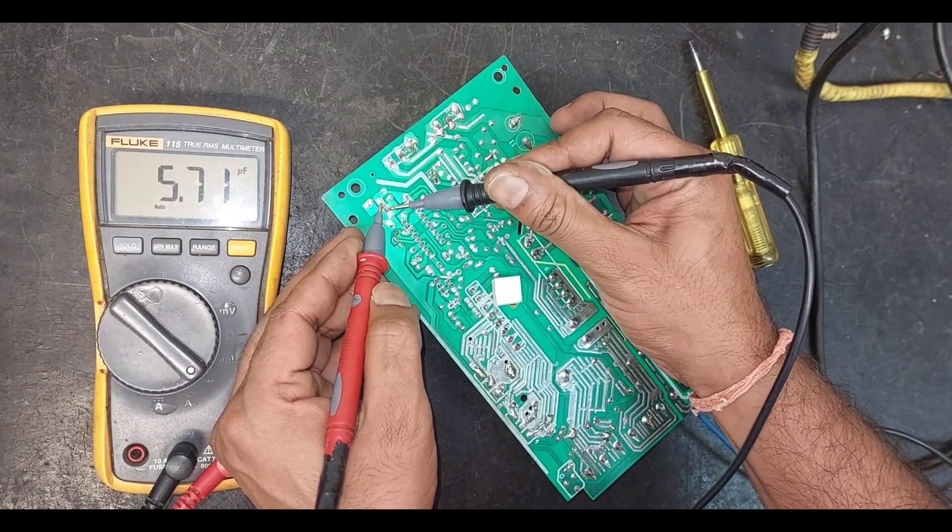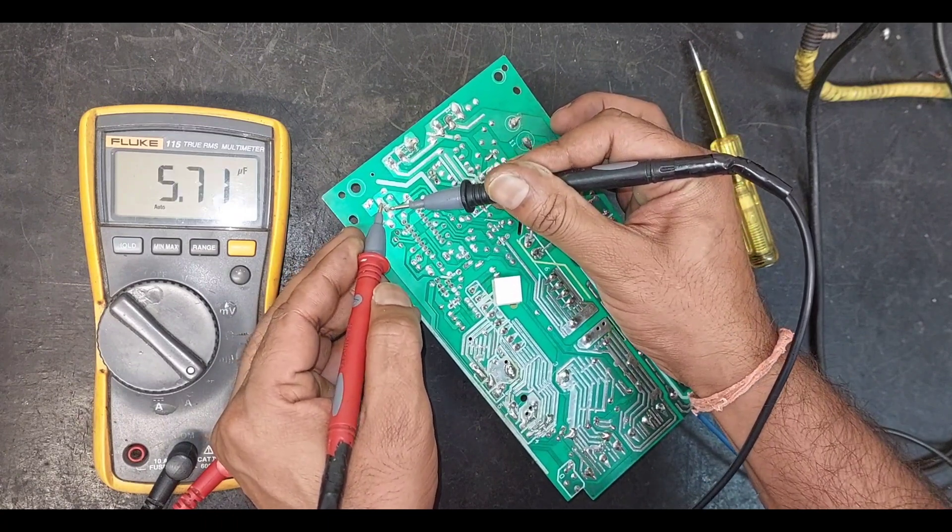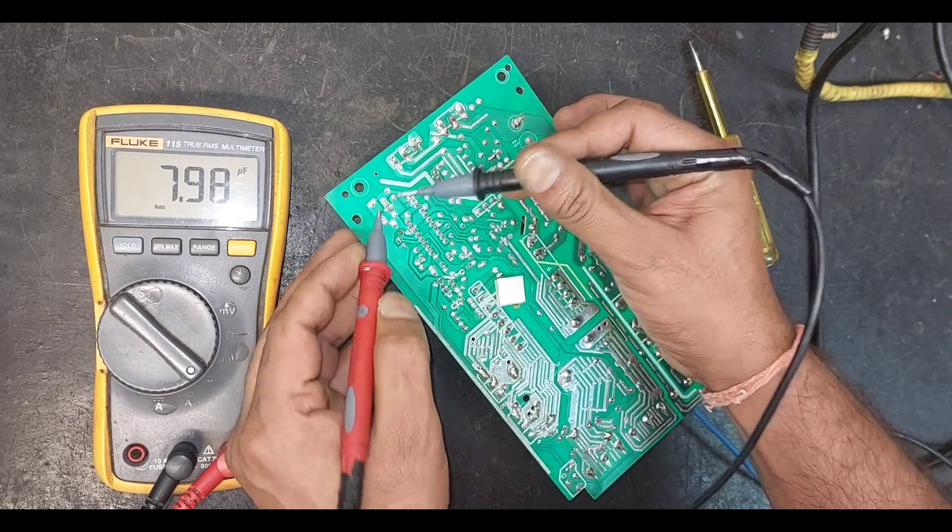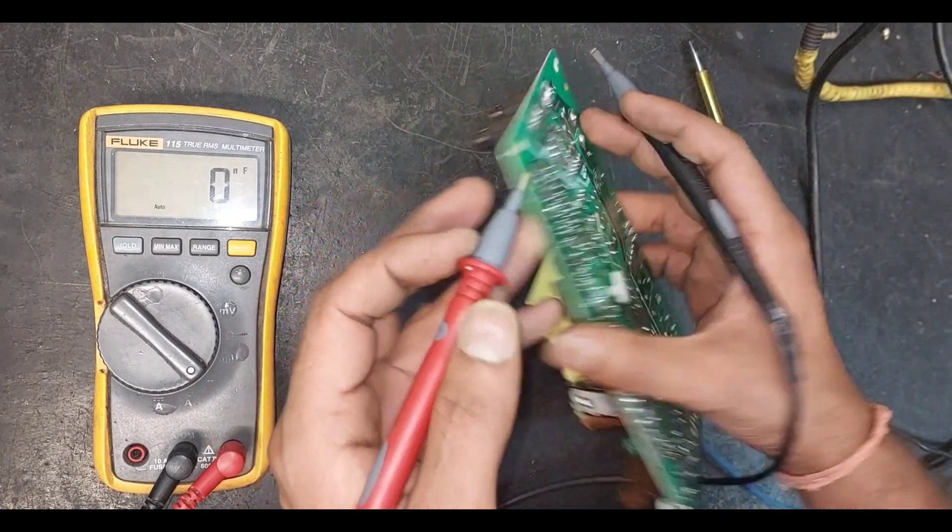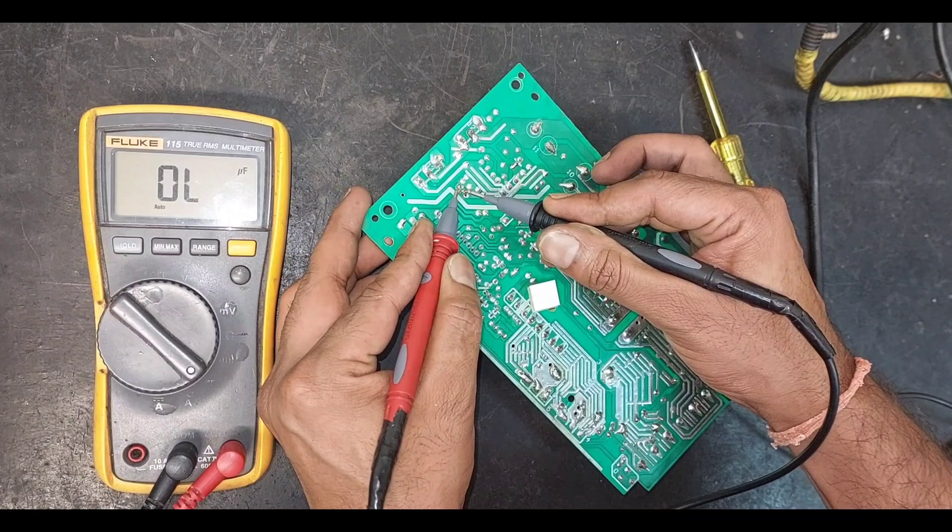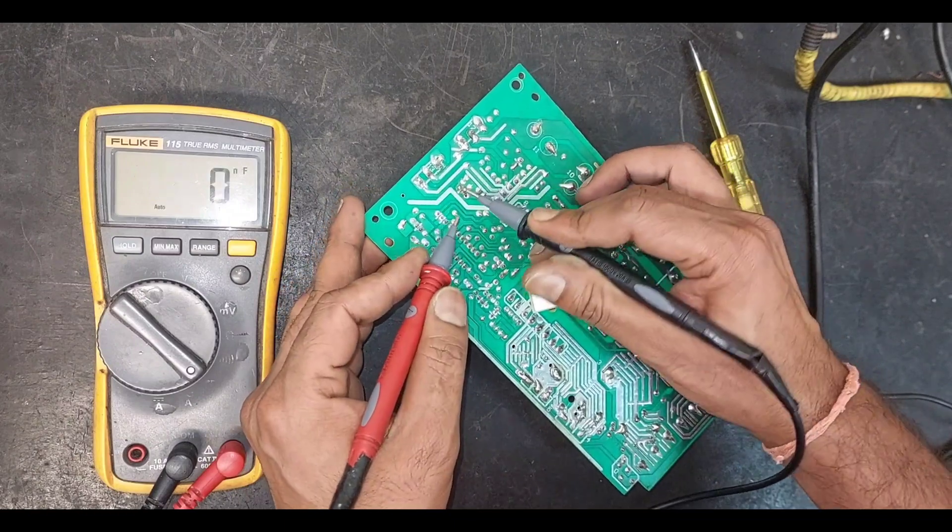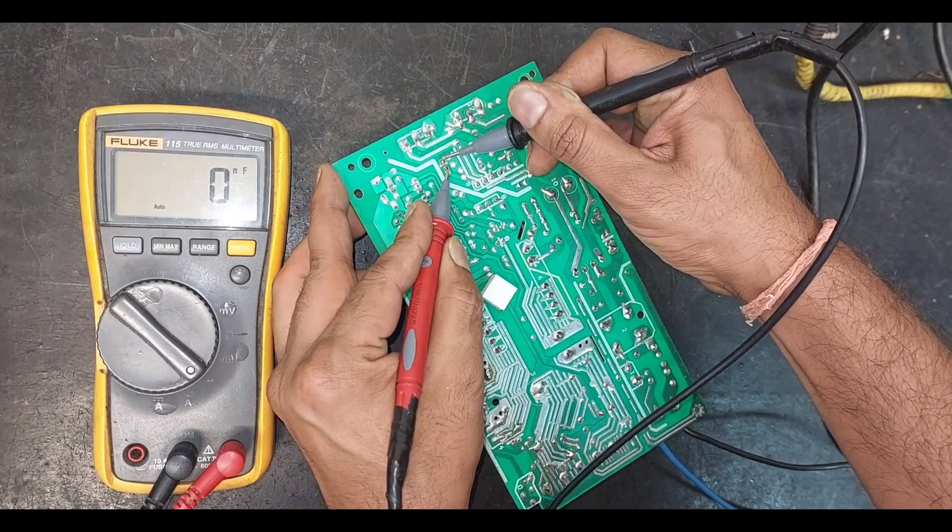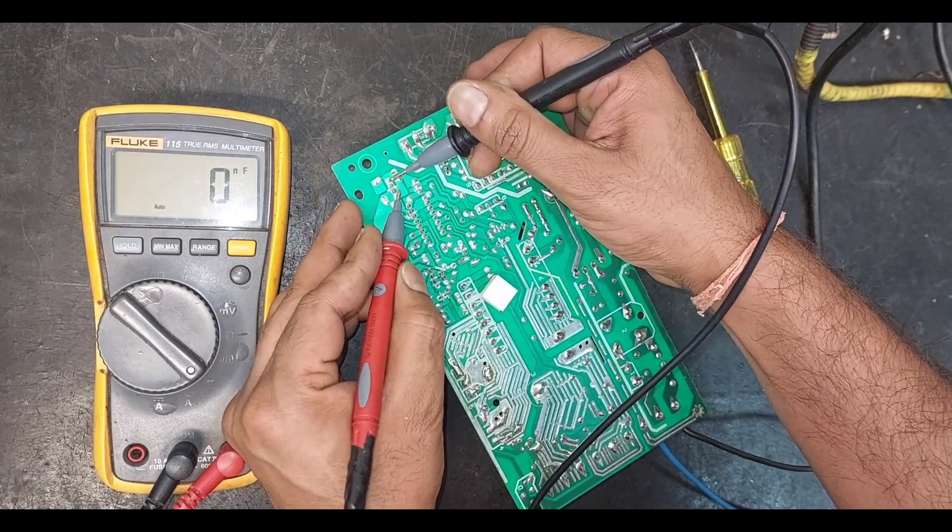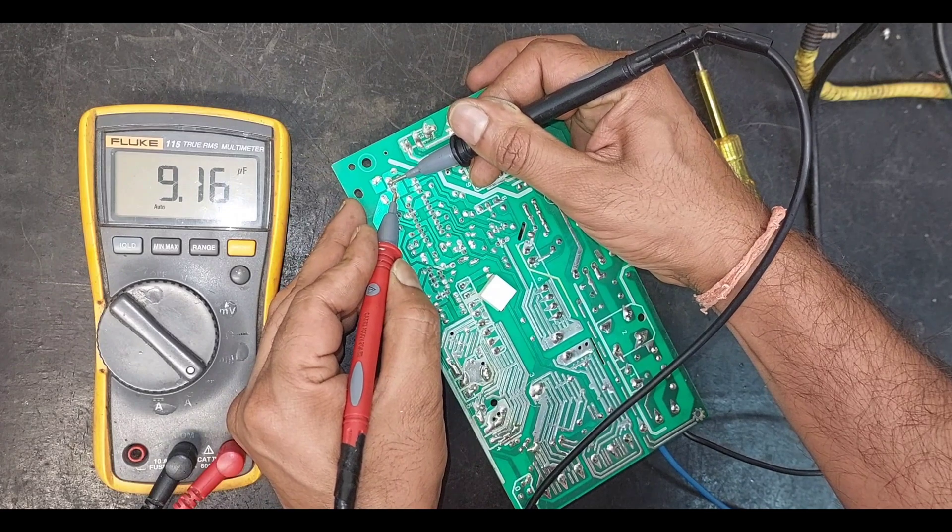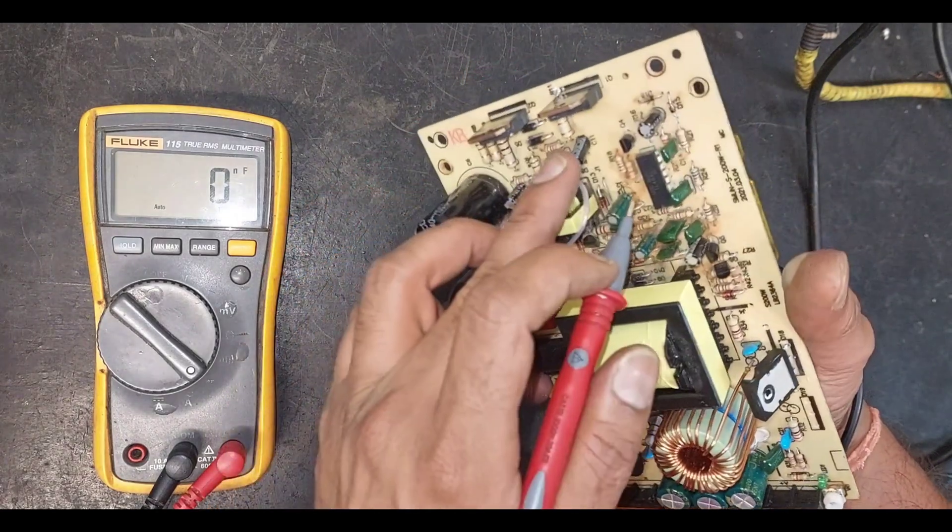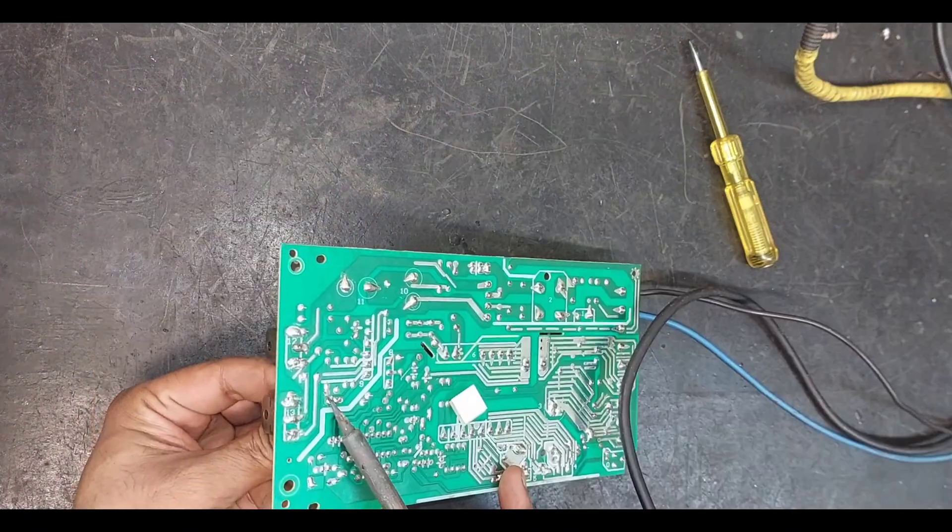This capacitor is showing a value around 7.98 microfarad. After this we will check this capacitor and it is showing OL, means out of limit. So first we will make it discharge and then again we will check. This capacitor is showing value 0 nanofarad, and the same capacitor here is displaying around 9 microfarad. So let's replace this capacitor and see what happens.